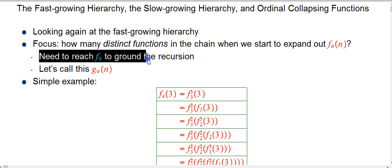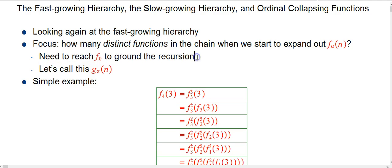The idea is that we're going to start expanding things out and try to get down to good old f sub zero, which was the successor function, just adding one. And I want to know how many distinct functions appear in that chain. The functions typically get repeated multiple times, but I just want to know how many distinct functions show up.